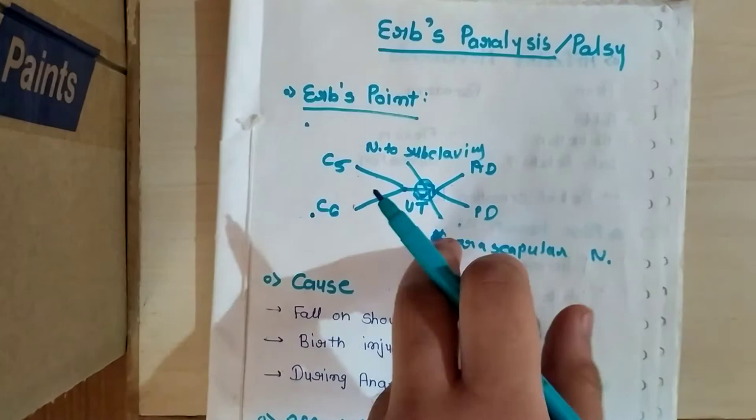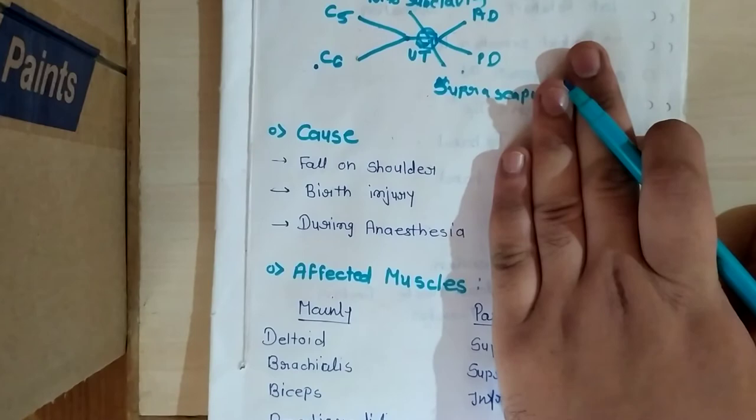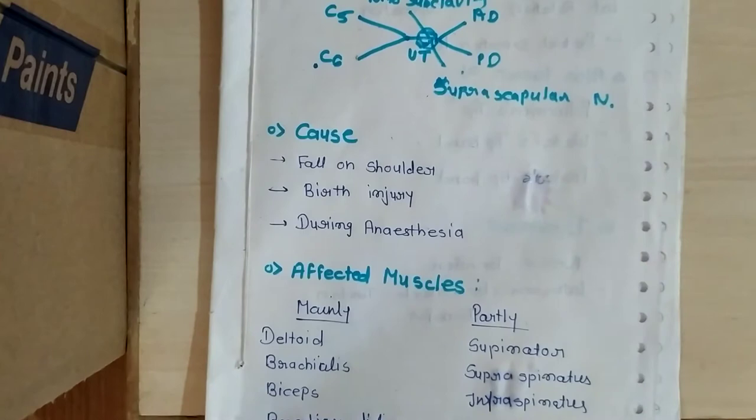Now, when is this Erb's palsy called? When this Erb's point is damaged or injured, then this Erb's palsy occurs. There are three main causes.